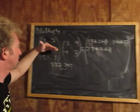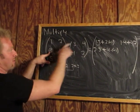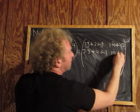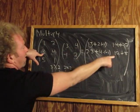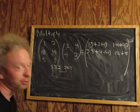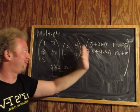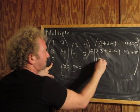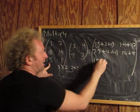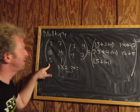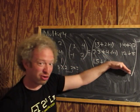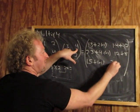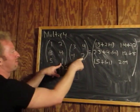Second row, second column: 3 times 4 — I'll just put 12 — plus 4 times 2 is 8. So 3 times 4 is 12, 4 times 2 is 8. Almost done. This is the third row, first column: 5 times 3, plus 1 times negative 1 is negative 1. And last but not least, the third row, second column: 5 times 4 is 20, plus 1 times 2 is 2.